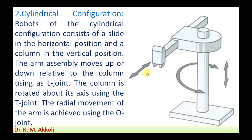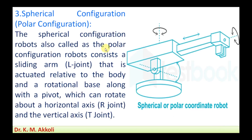In the cylindrical configuration, there are two linear motions and one radial motion. Where one radial and two linear motions are required, we can use this type of configuration.